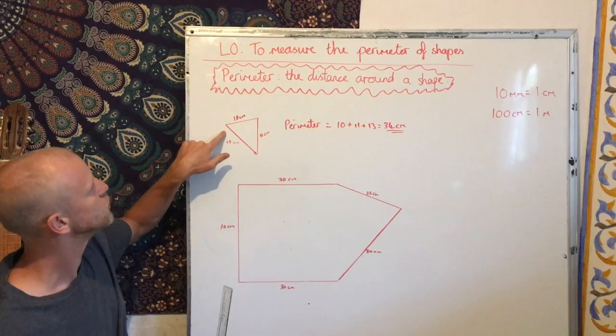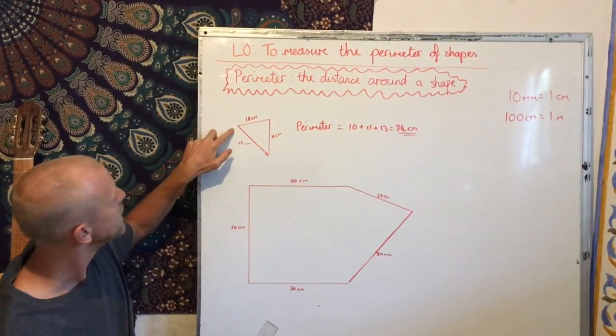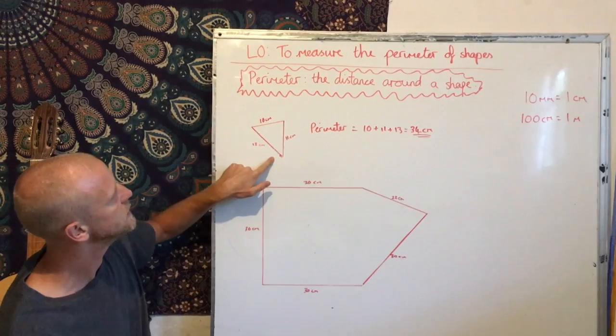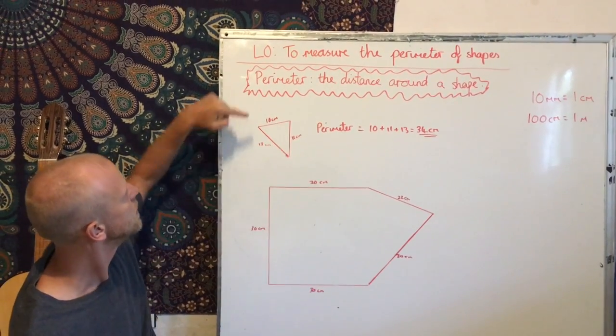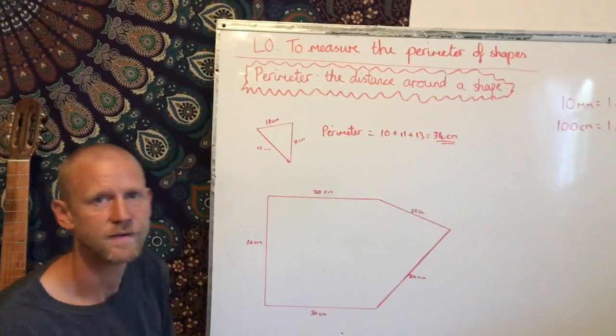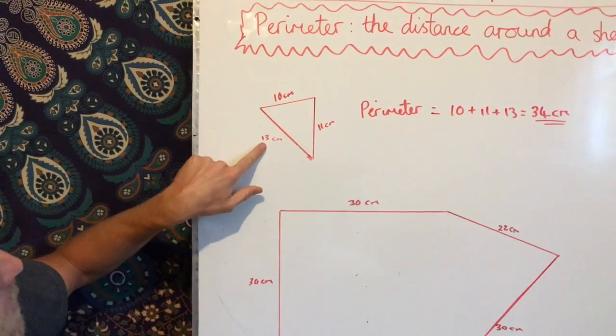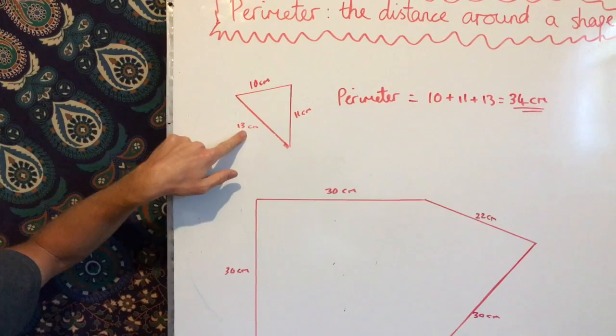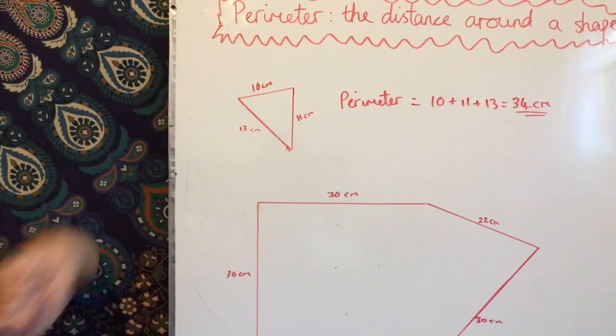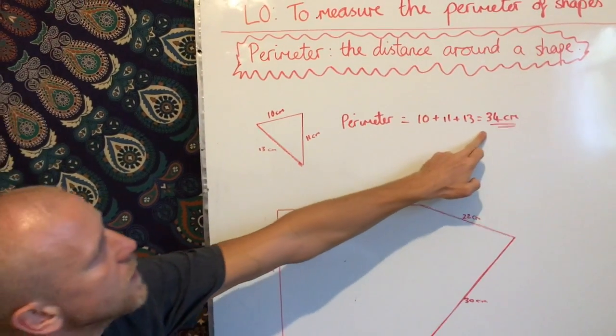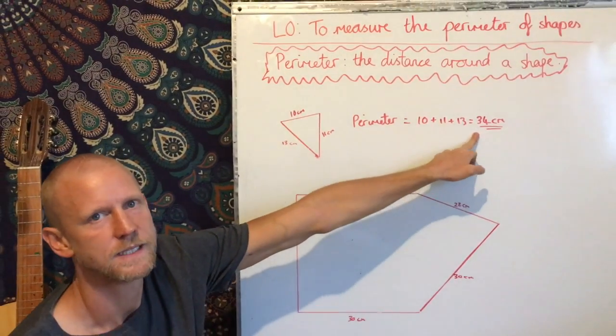So I drew this triangle and then I measured it and I found this side was 13 centimetres, this was 11 and this side was 10. So to find the perimeter, I just had to add up the distance, the length of each side, 13 and 11 add 10. So the perimeter of this shape was 34 centimetres.